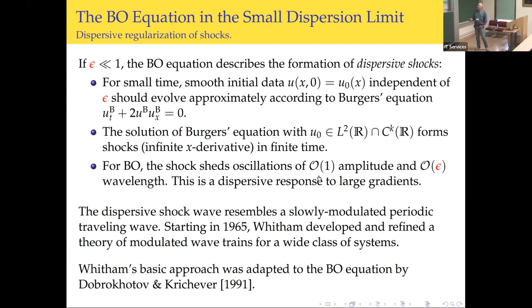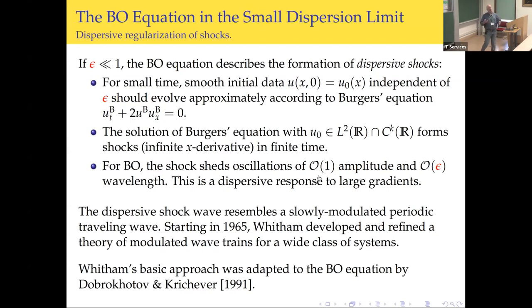How do we describe this kind of thing? The dispersive shock wave — this train of pulses of solitary waves — really resembles a slowly modulated periodic traveling wave. So we think about Whitham's modulation theory. He came up with this idea in 1965. He had a way of defining a description for how these trains should evolve in time. It works really great for differential equations, but the Benjamin-Ono equation has this non-locality through the Hilbert transform, so you have to modify the approach. This was all carried out in a paper by Dobrokhodov and Krichever in 1991, who adapted the Whitham approach to Benjamin-Ono.